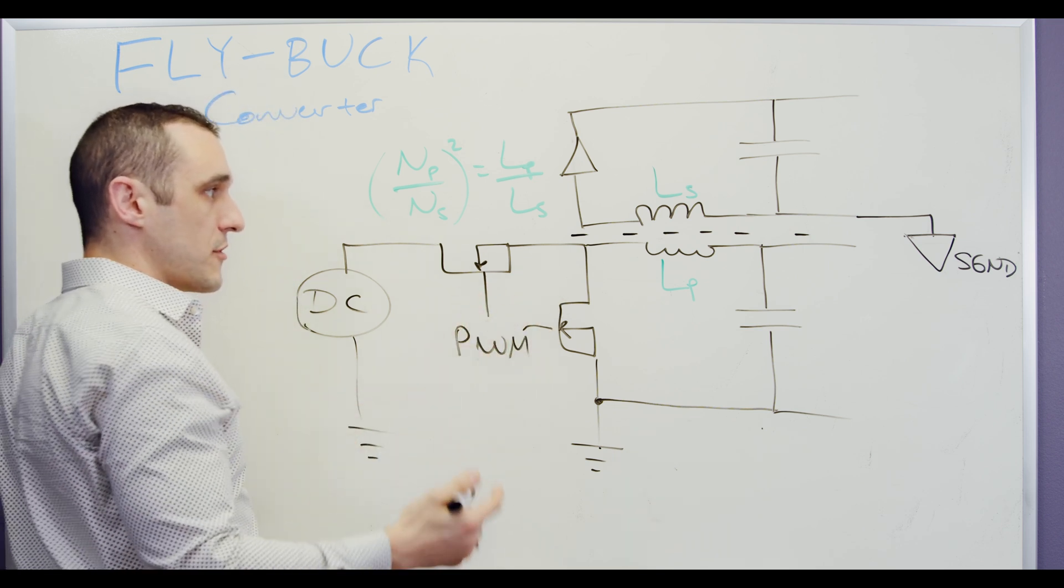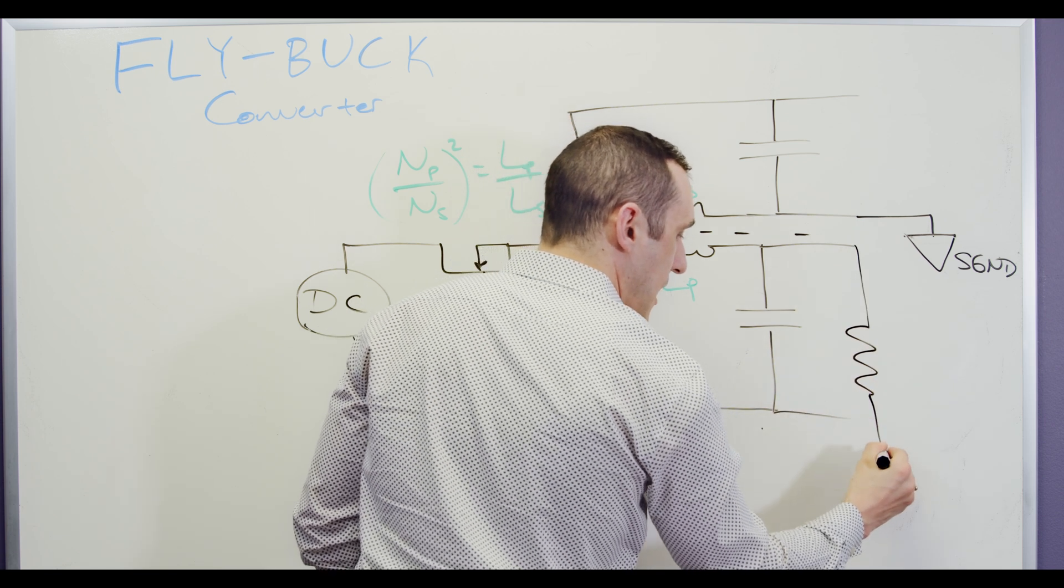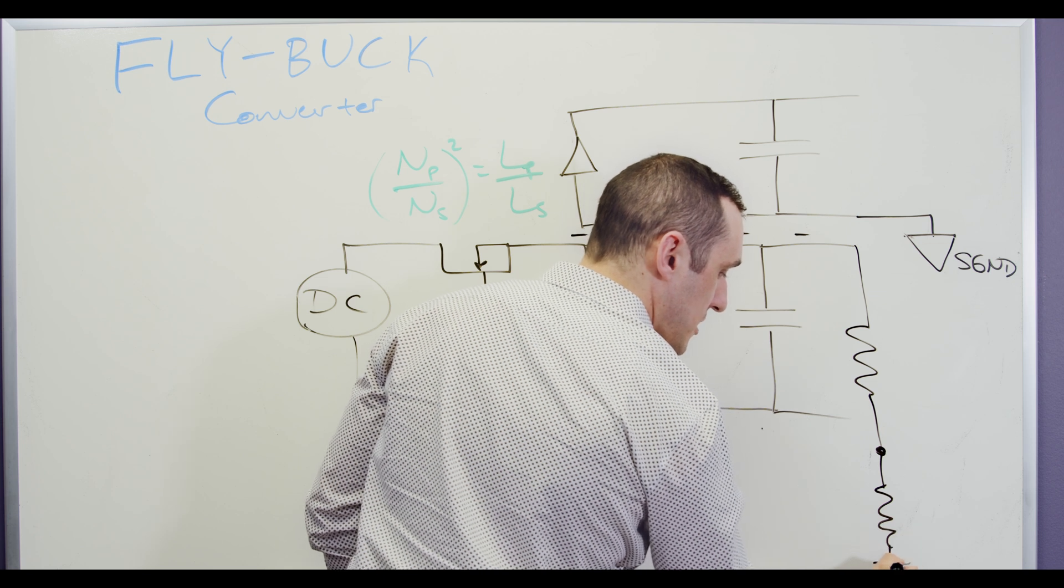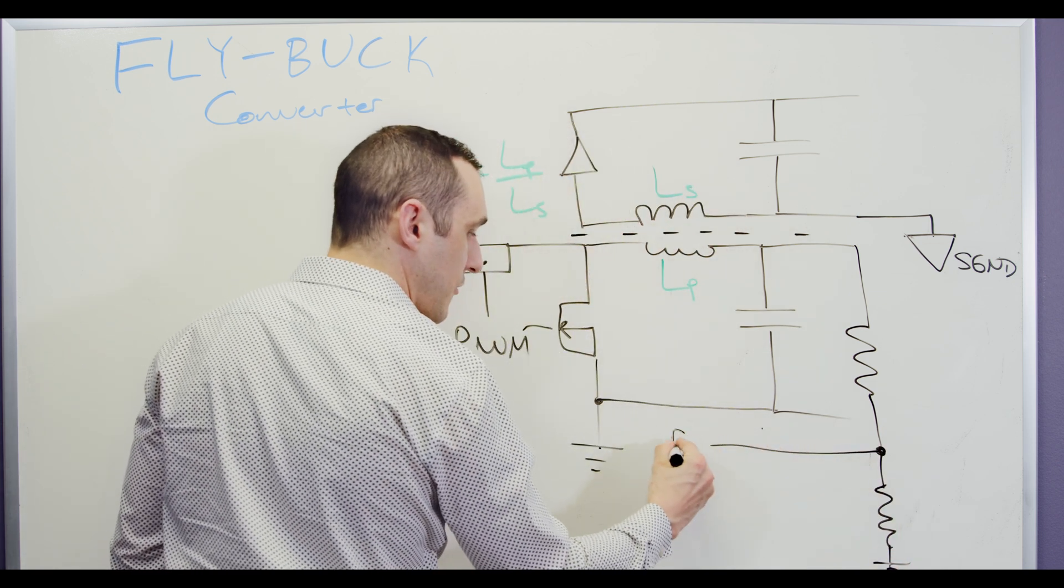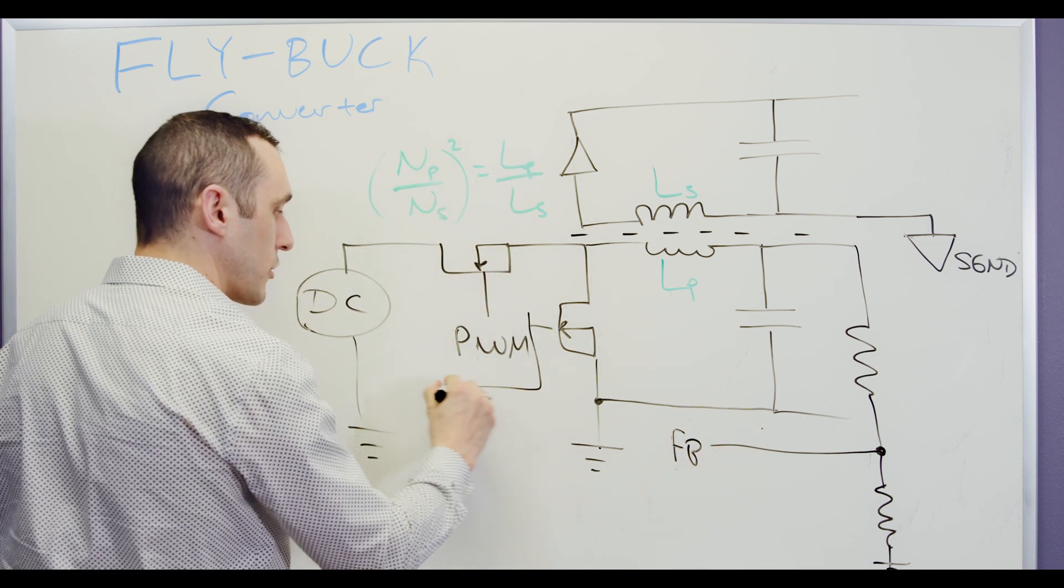Well, typically in this type of voltage converter, what you would do is you would have essentially a feedback loop that looks something like this. So I have two resistors. This is going to ground. And then this would come back to the feedback pin on whatever PWM based controller I have.